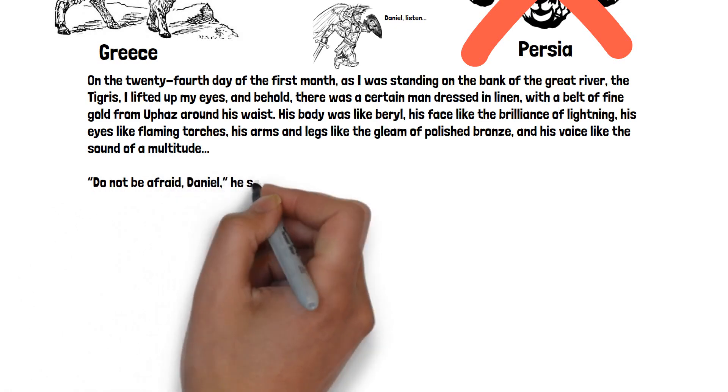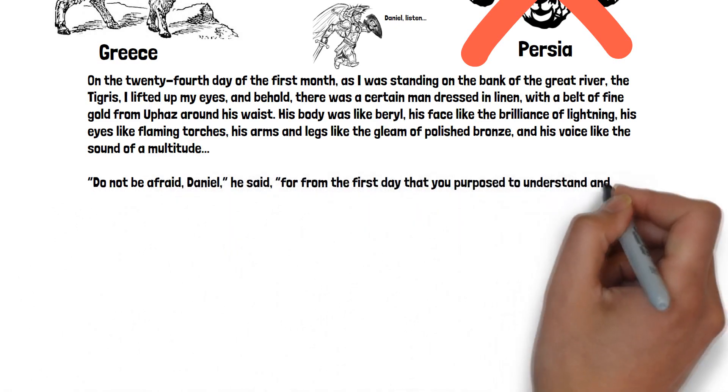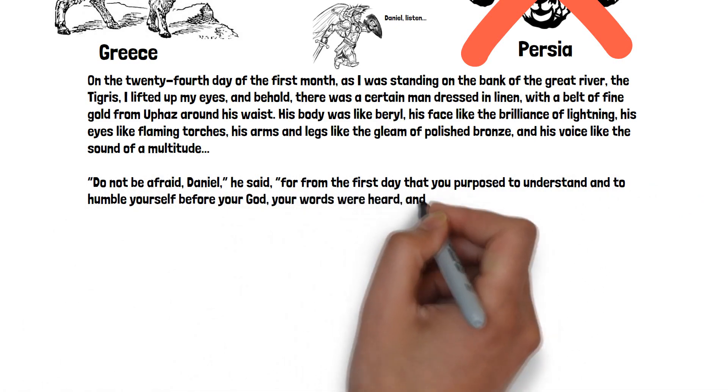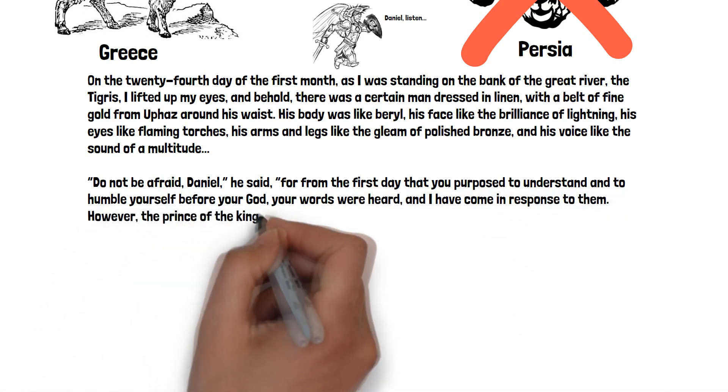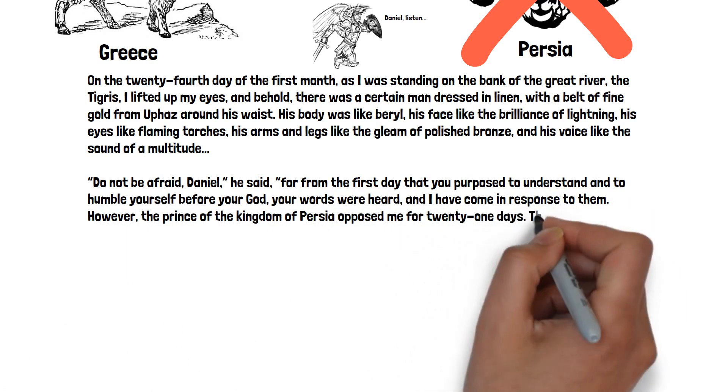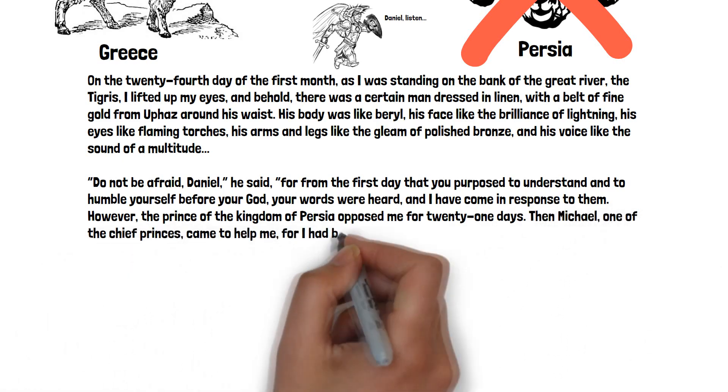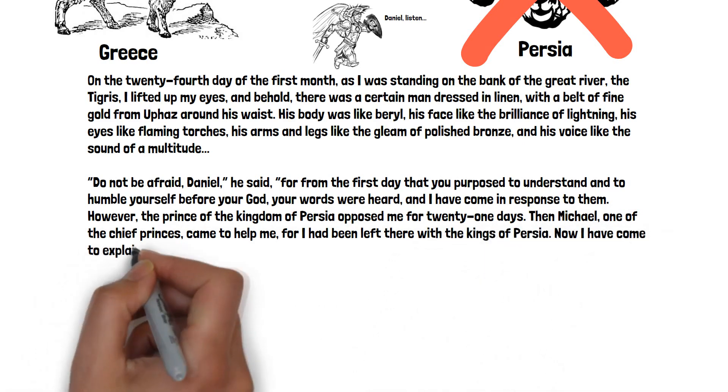Do not be afraid, Daniel, he said. For from the first day that you purposed to understand and to humble yourself before your God, your words were heard, and I have come in response to them. However, the prince of the kingdom of Persia opposed me for 21 days. Then Michael, one of the chief princes, came to help me, for I had been left there with the kings of Persia.